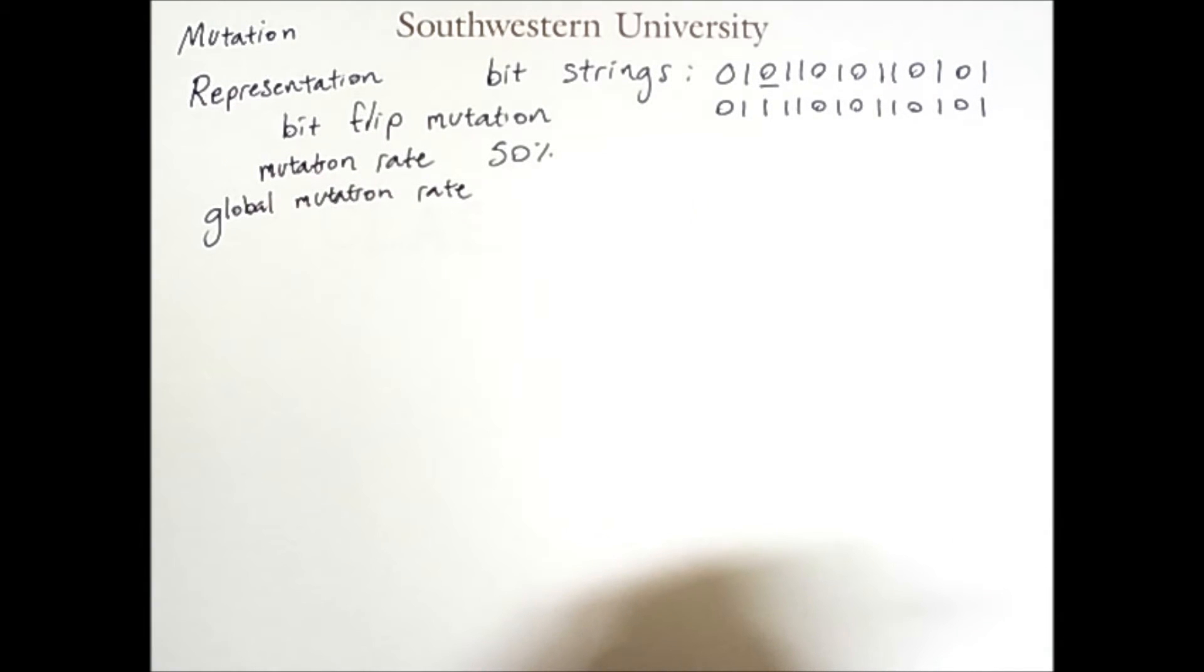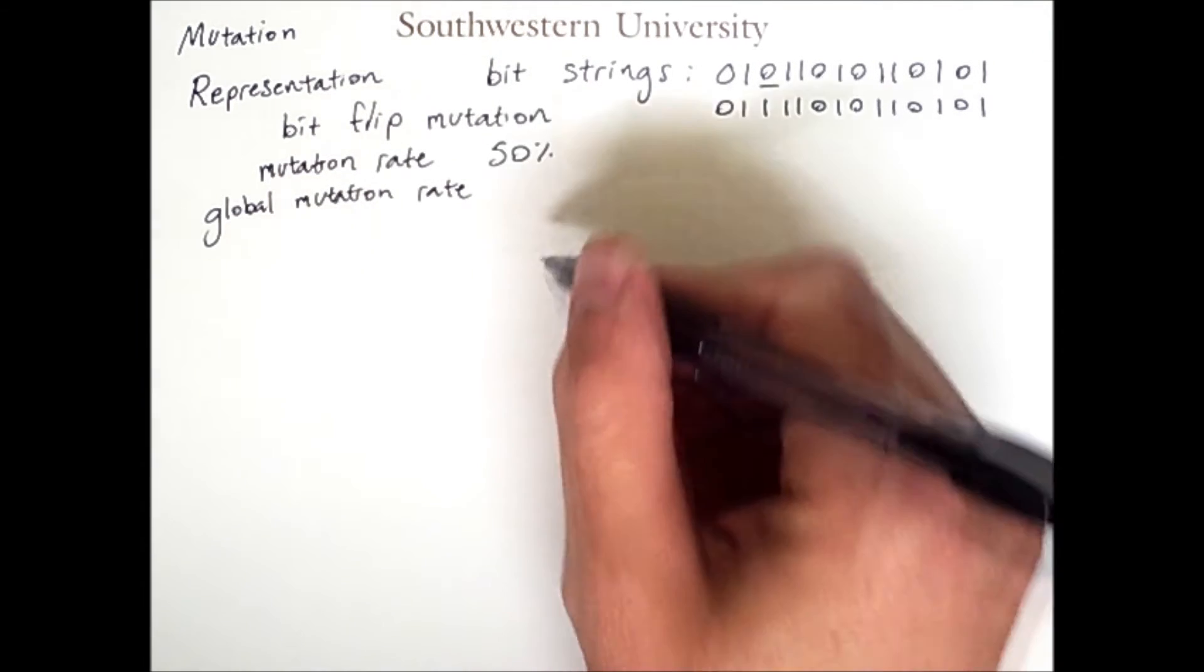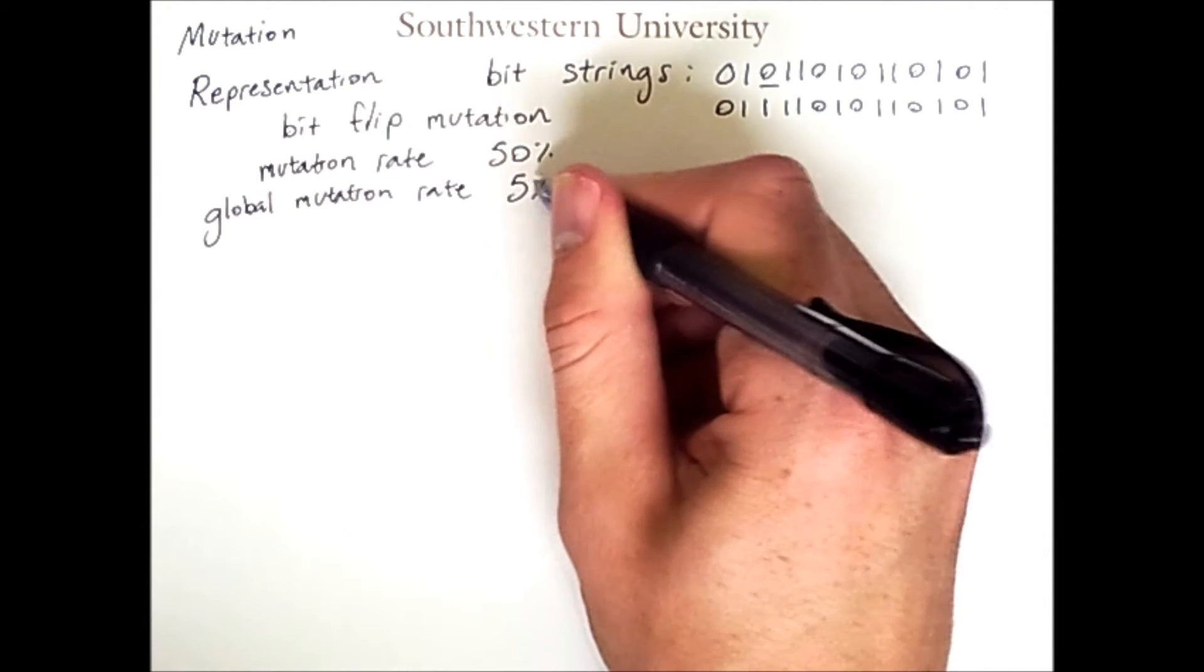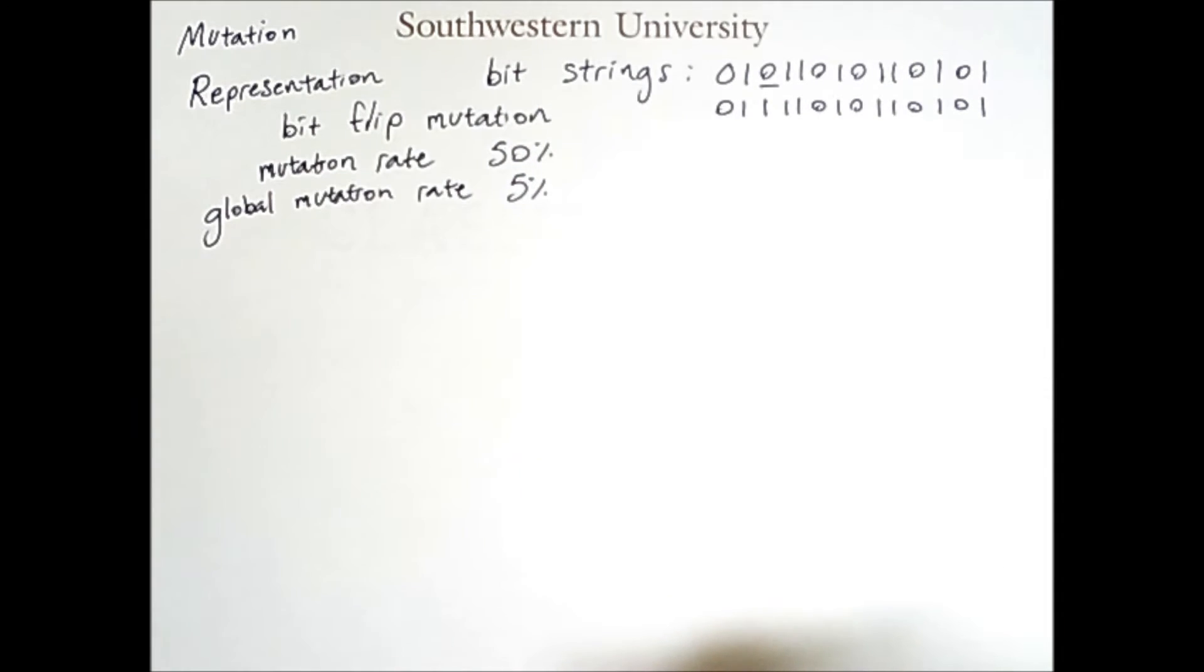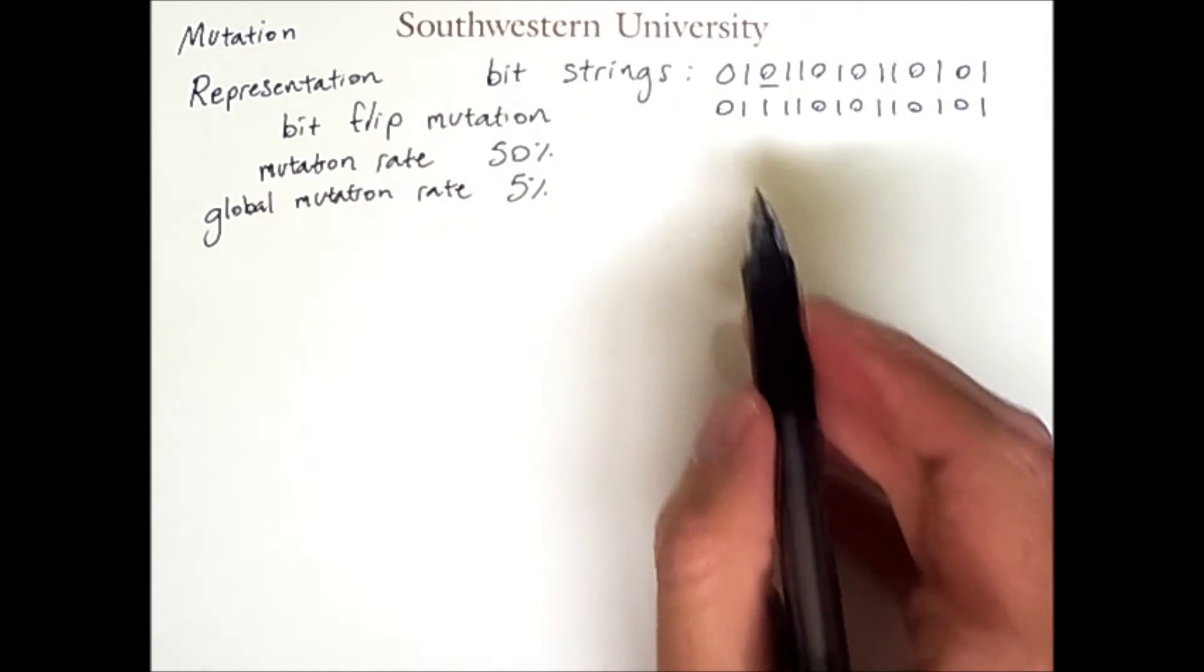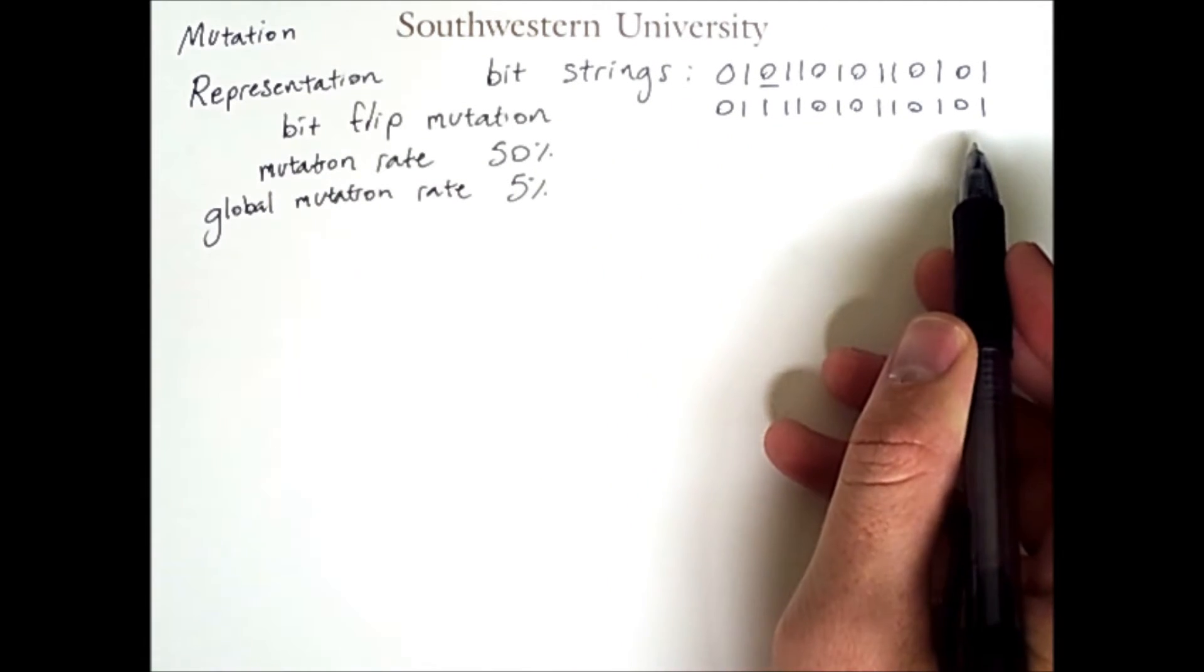However, it is also common to have a global mutation rate that is smaller, for example 5%, meaning that for every individual bit in the bitstring,